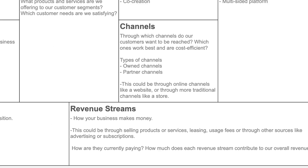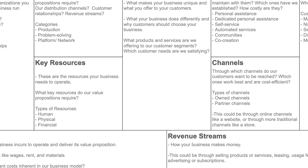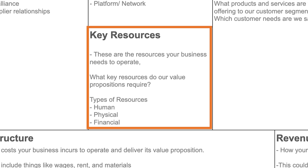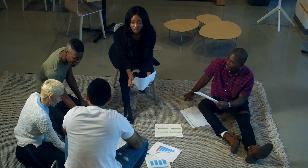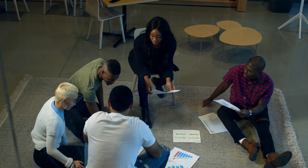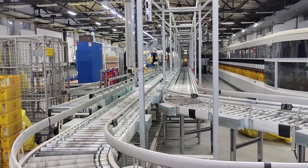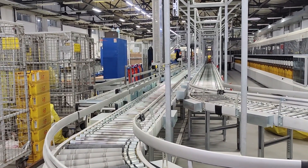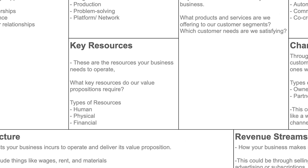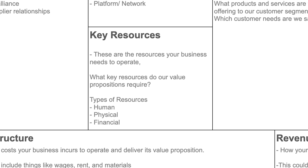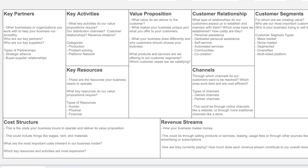The next key element is your key resources, which refers to the resources your business needs to operate — what things you require in order to deliver value to your customer. This can be human resources such as employees, physical resources like equipment or inventory, and financial resources such as money needed to run marketing campaigns. Put in the key resources that your business needs.